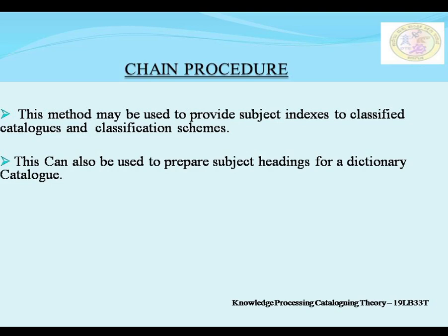Chain Procedure is used as a subject index to a classified catalog. It is compared to the subject index used in a dictionary catalog. The method of alphabetical catalog preparation follows the same chain procedure.